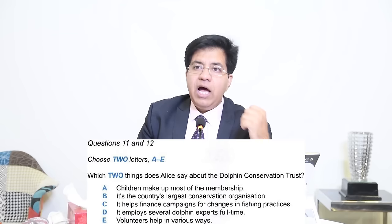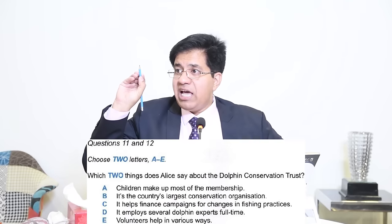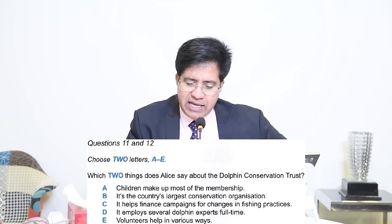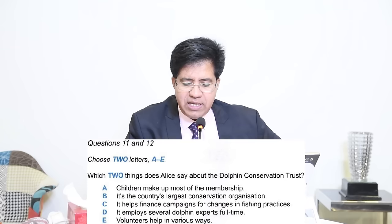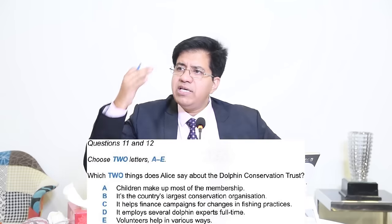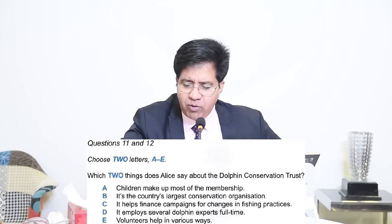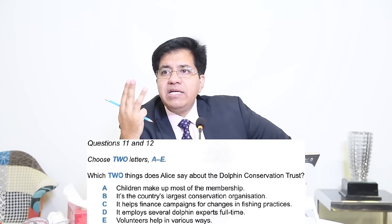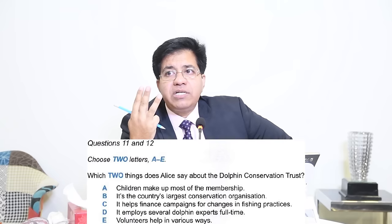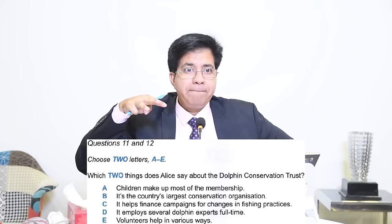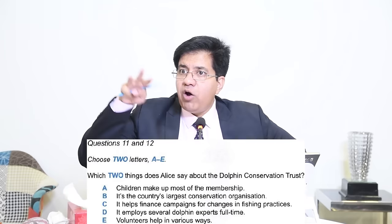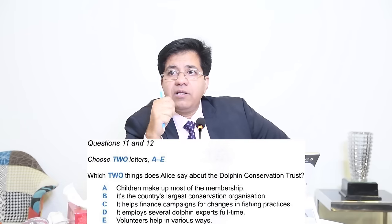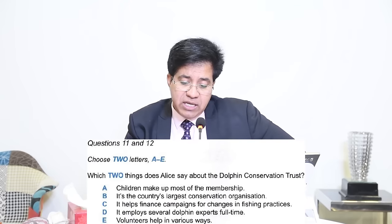Whenever there are multiple choice questions, first read the question statement very carefully, underlining important words. For example: 'Which two things does Alice say about Dolphin Conservation Trust?' Underline 'two things,' 'Alice say,' and 'Dolphin Conservation Trust.' There are five options in total — out of five, three statements will be false according to the audio, and only two options will match — those are the right answers.